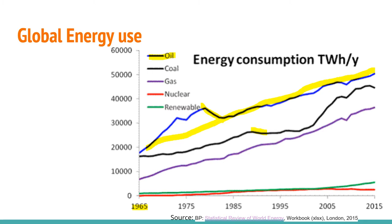In the 80s and 90s people thought coal would go down, because it produces a lot of carbon dioxide — global warming. Coal should have reversed its role in our life. But then China and other developing countries came in and they use a lot of coal for producing electricity.